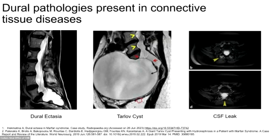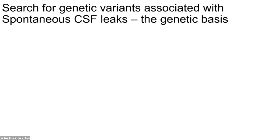For example, dural ectasia, in which there is outpouching of the dural sac, is one of the major criteria for diagnosis of Marfan syndrome, and it occurs in about 30% of Loeys-Dietz syndrome patients. Tarlov cysts, which are innervated arachnoid nerve root cysts, also occur commonly in patients with Marfan syndrome. And of course, CSF leaks are more common in connective tissue diseases.